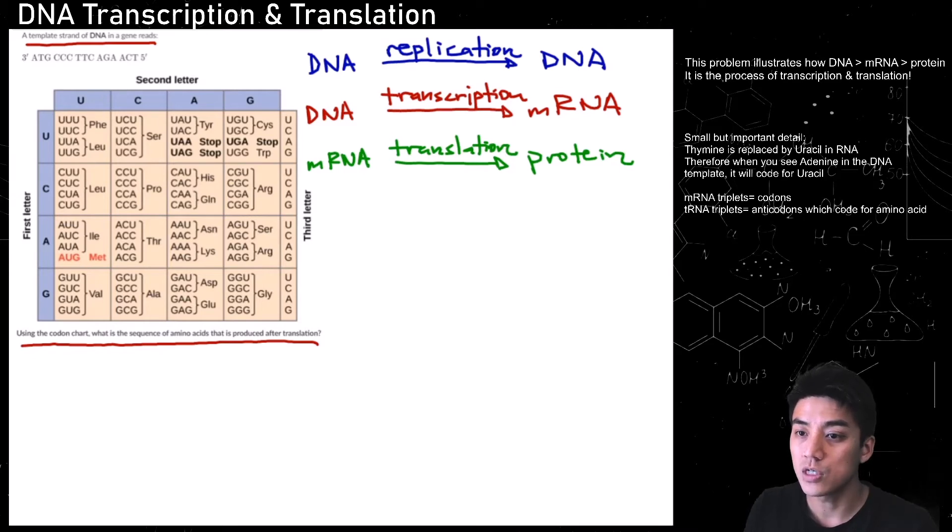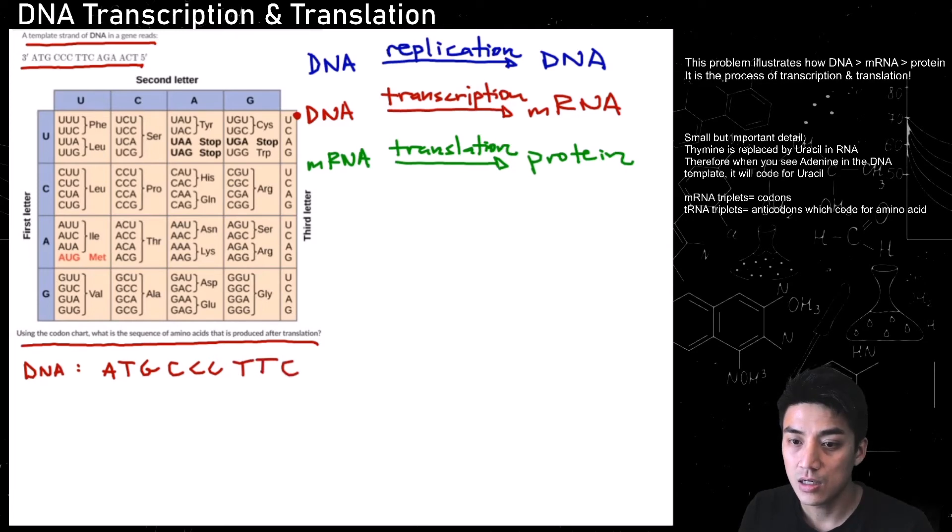So we're going to look at both transcription and translation to see what kind of protein is created. All right, so the first thing to do is just to copy down that template strand. All those letters there, the bases. So you have your ATG. This is your DNA strand. And it's easiest if you just read it in triplets. You'll see what I mean. So ATG, CCC, TTC, AGA, ACT. So adenine, cytosine, thymine. So that's your DNA template.